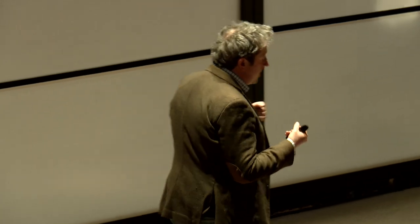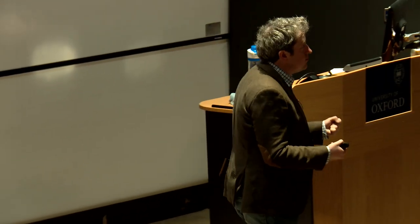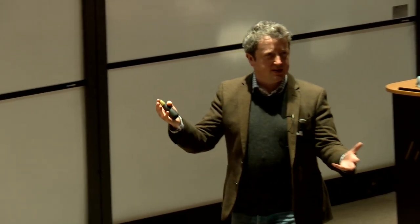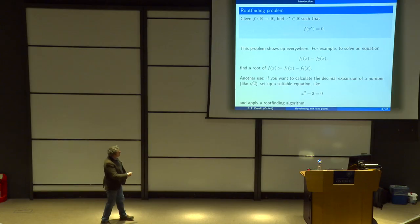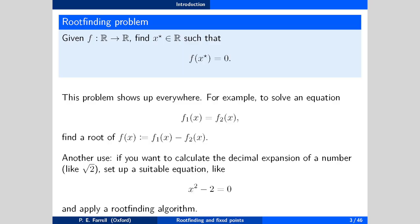Another use: if you want to calculate the decimal expansion of a number — say you want to know the digits of root 2 because you're on a desert island and need to know how long the crossbeam of your boat should be — then what you would do is set up a suitable equation that root 2 is one of the solutions of, and then use a root-finding algorithm. For example, this is the way that your calculator calculates square roots.